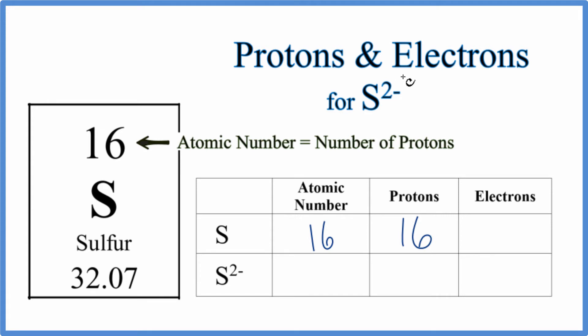When we compare an ion like S2 minus to neutral sulfur, the only thing that's different is the number of electrons. The protons and atomic number stay the same at 16. So for the ion, only the number of electrons is different.